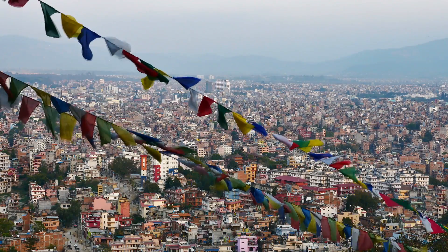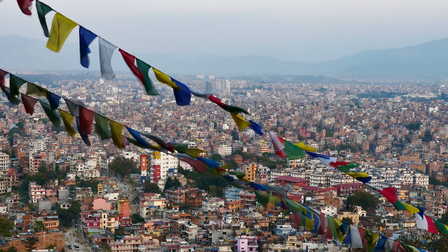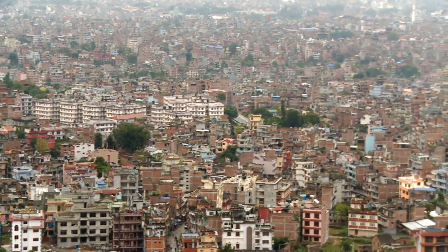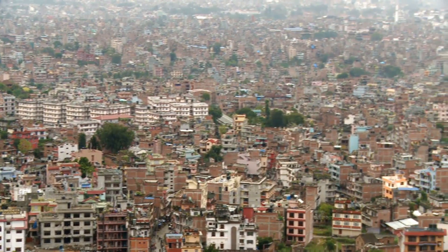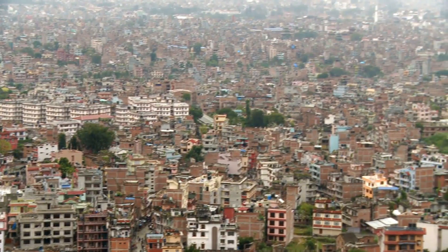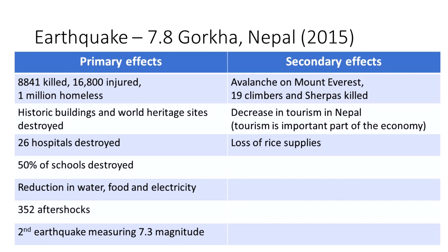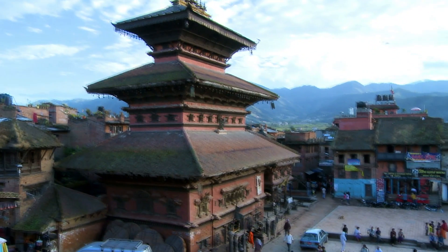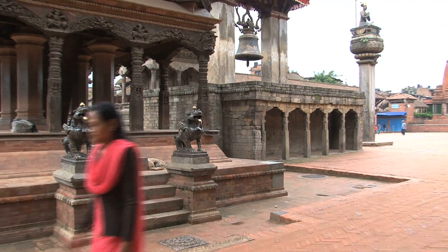When we look at the Nepalese earthquake from 2015, you'll see very different numbers when it comes to the death toll, injuries, and people being homeless — and you should have two contrasting case studies to talk about. Some of the primary effects were over 8,000 dead and 16,000 injured, with lots of damage to historical buildings and temples.